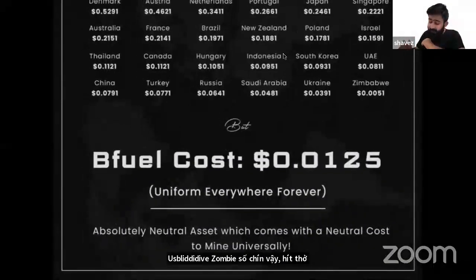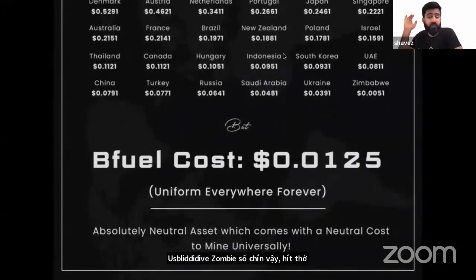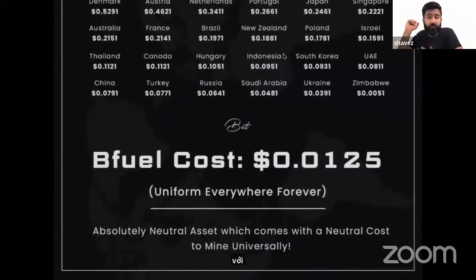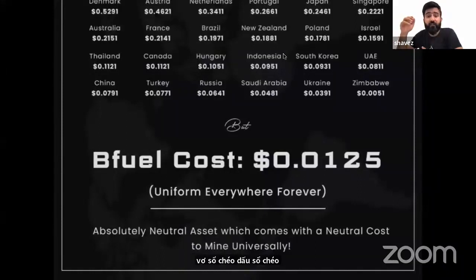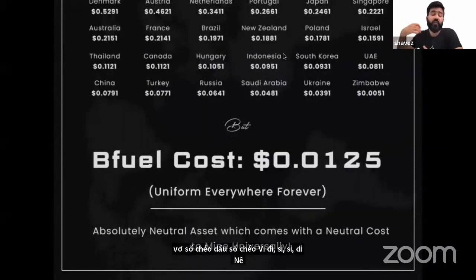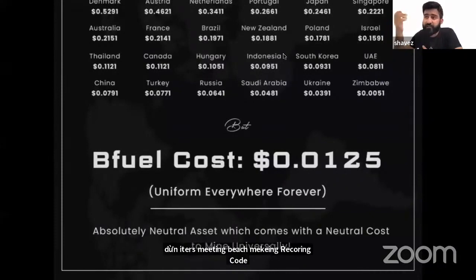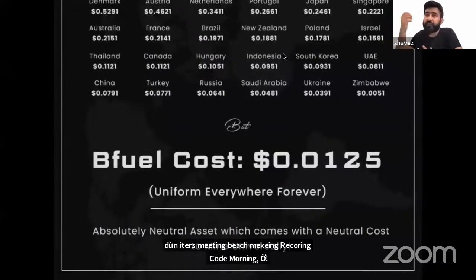But with BTCC, you have BFuel, which is fixed, which is uniform, which is uniform forever. Bitcoin is neutral. BTCC is neutral. BFuel is making the Bitcoin code more neutral — a uniform asset, a universal asset.